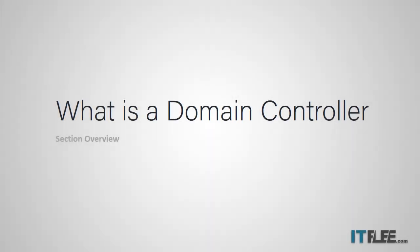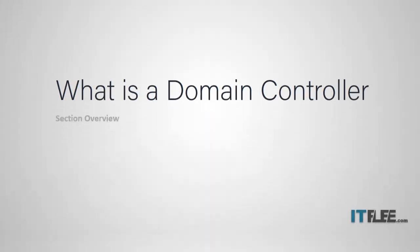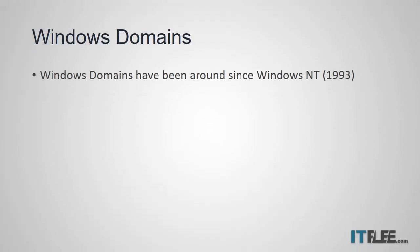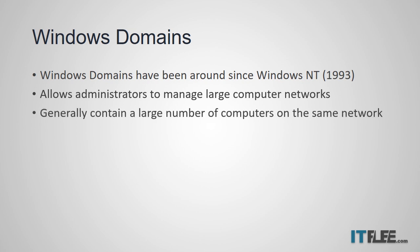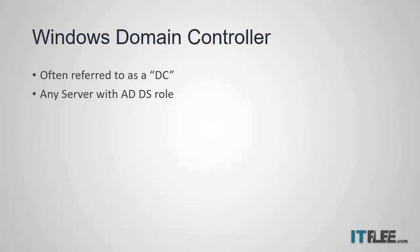The goal of this lecture is to help you understand what a Windows domain and Windows domain controller is. Windows domains have been around since 1993 with the release of Windows NT. They provide system administrators an efficient way to manage small or large networks. You only need one domain controller, or DC for short, to build a Windows domain, although most Windows domains contain several servers and computers.